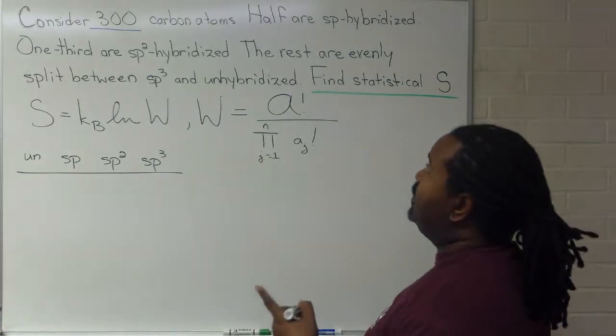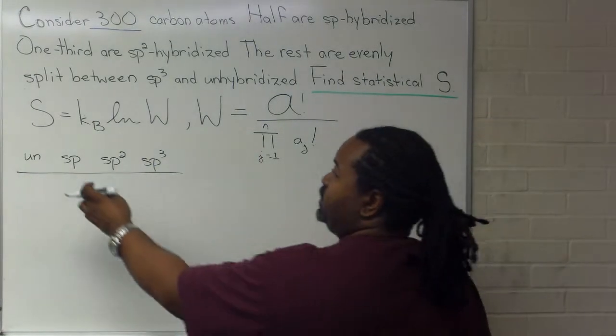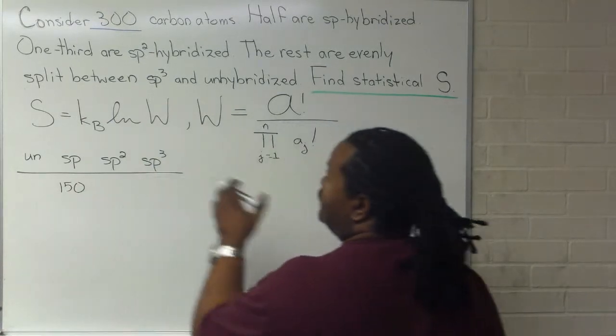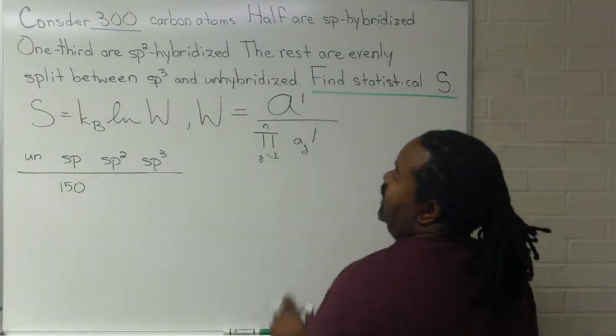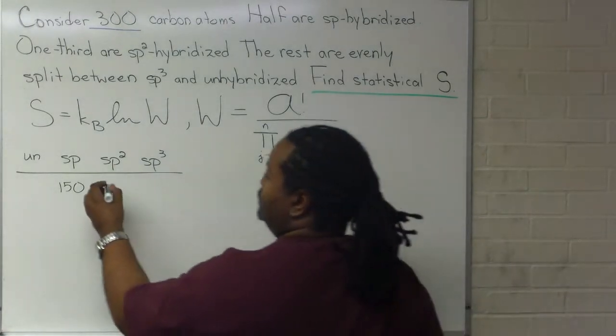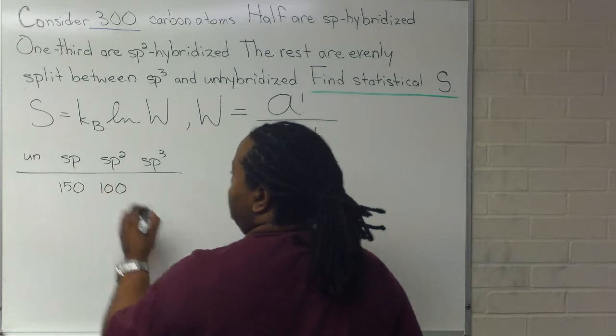So, we're told that half of these are SP hybrids, so half of the 300 is 150. We have one-third as SP-2. One-third of 300 is 100, so we have 100 here.